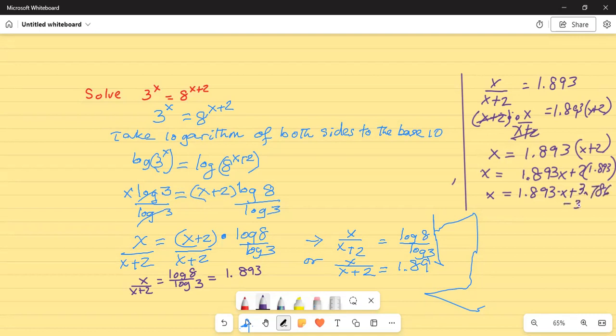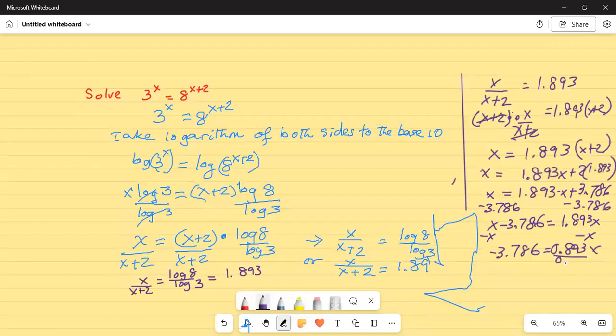Now, if I subtract 3.786 on both sides, I get x minus 3.786 is equal to 1.893 x. Then, I subtract x on both sides, which is 1x basically. So, minus 3.786 is equal to 1.893 minus 1x. 1.893 x minus 1x, which is 0.893 x. Now, divide by 0.893 on both sides. And, I get x is equal to 3.786 divided by 0.893, which is 4.24.